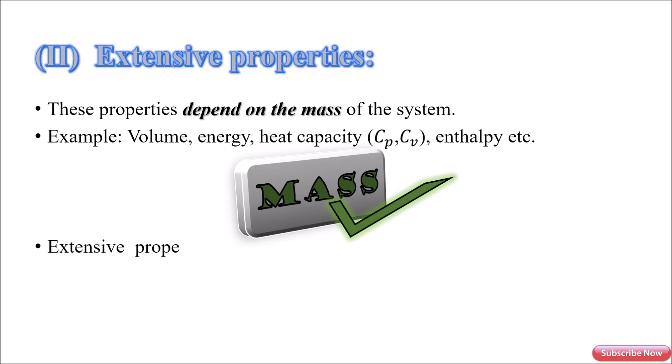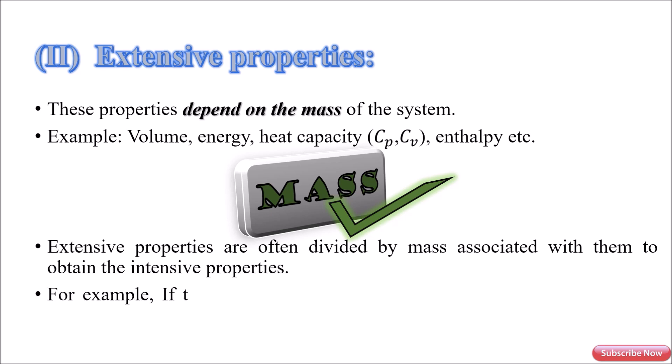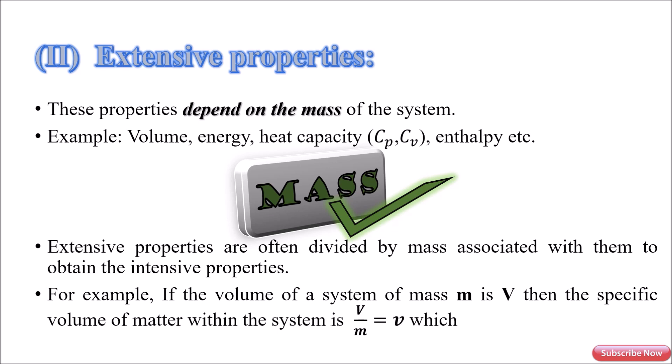Extensive properties are often divided by mass associated with them to obtain the intensive properties. For example, if the volume of a system of mass m is V, then the specific volume of matter within the system is V by m, which is an intensive property.